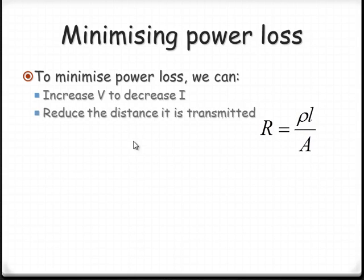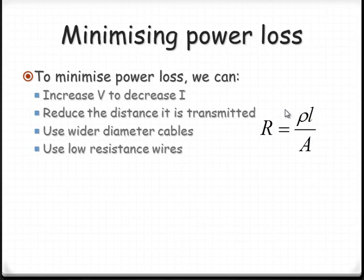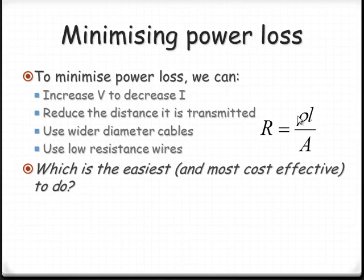So we could reduce the distance that it has to be traveled. That means more power sites closer to. We could use much wider diameter cables, and that would reduce the resistance. Or we can use low resistance wires. We could make it all out of gold. But really, the question is, what's easiest? And more importantly, what's the most cost effective way to do this?